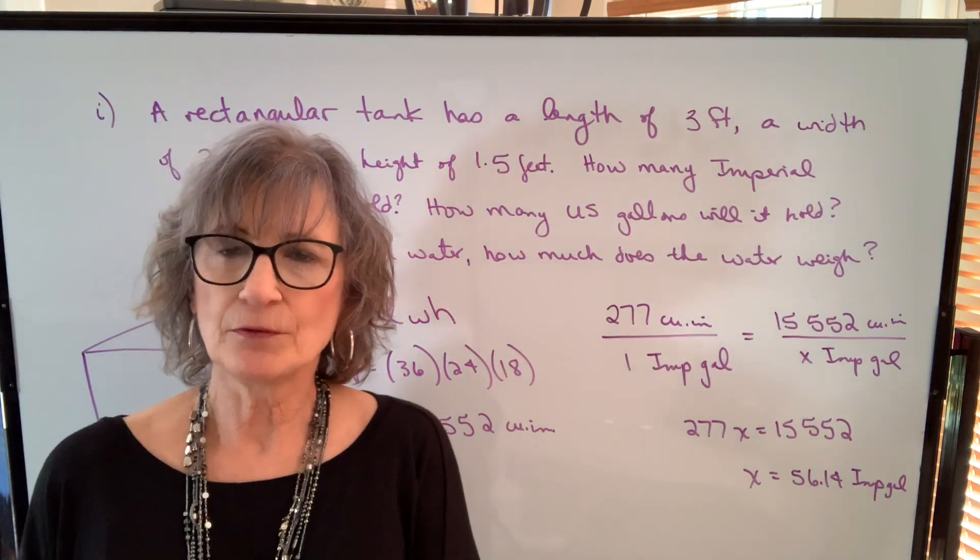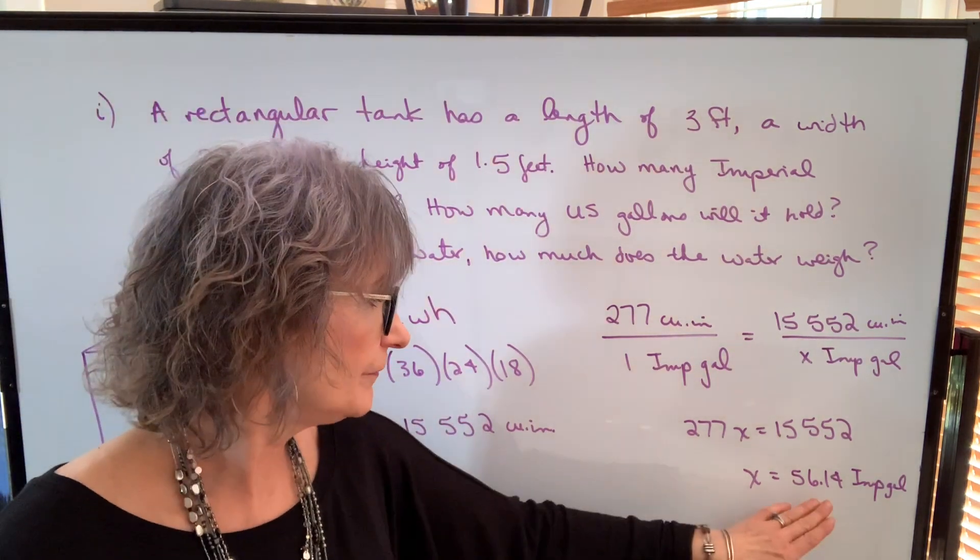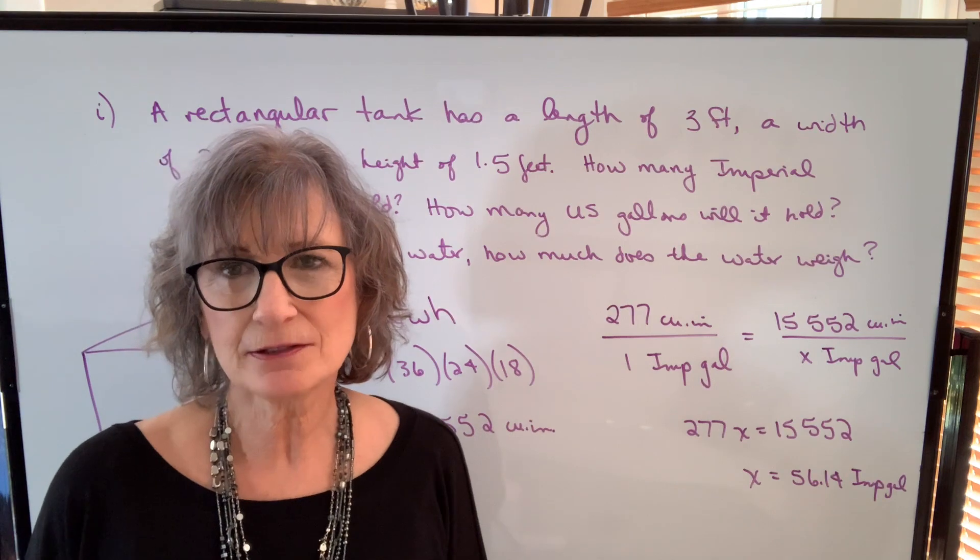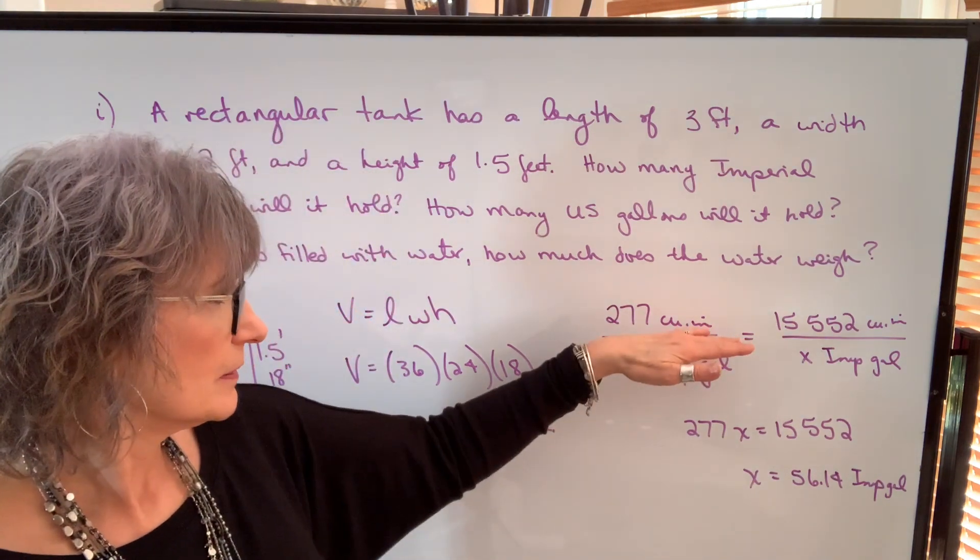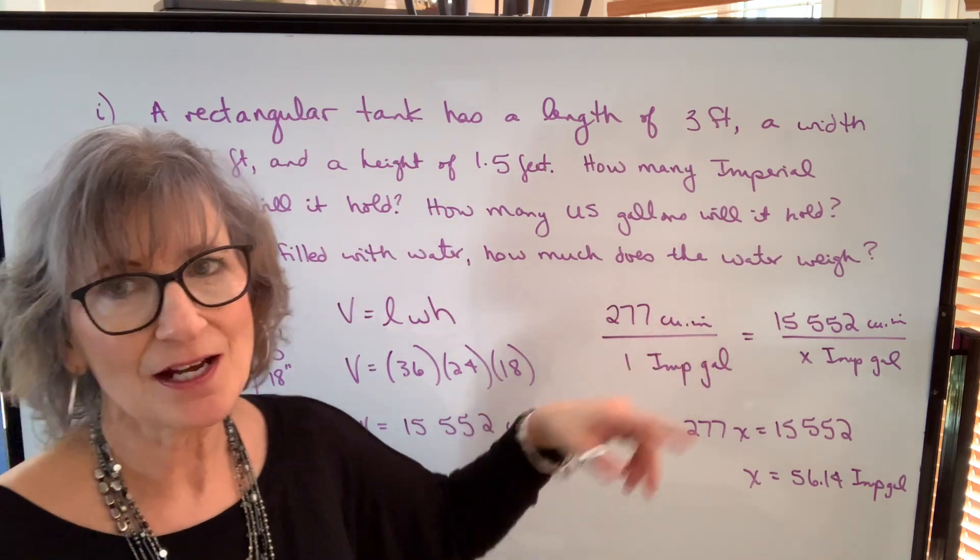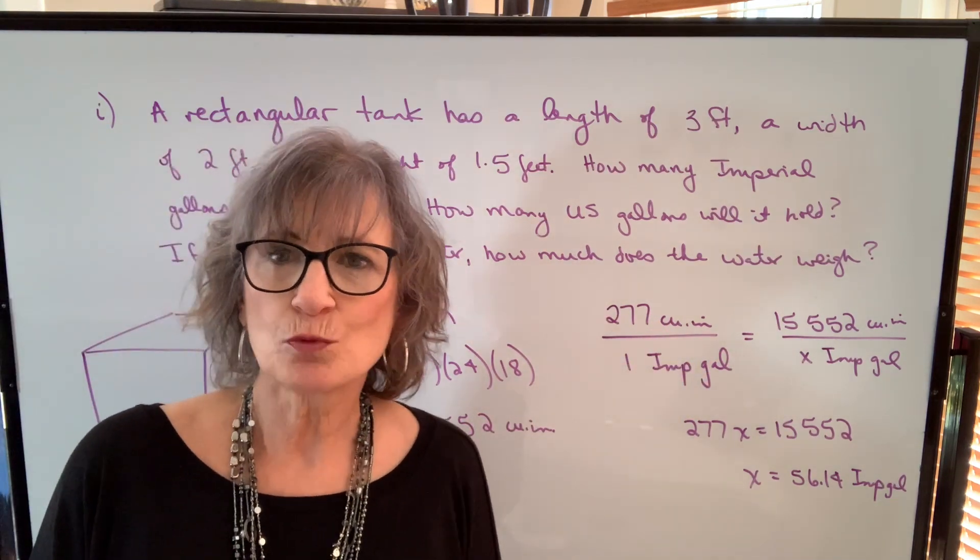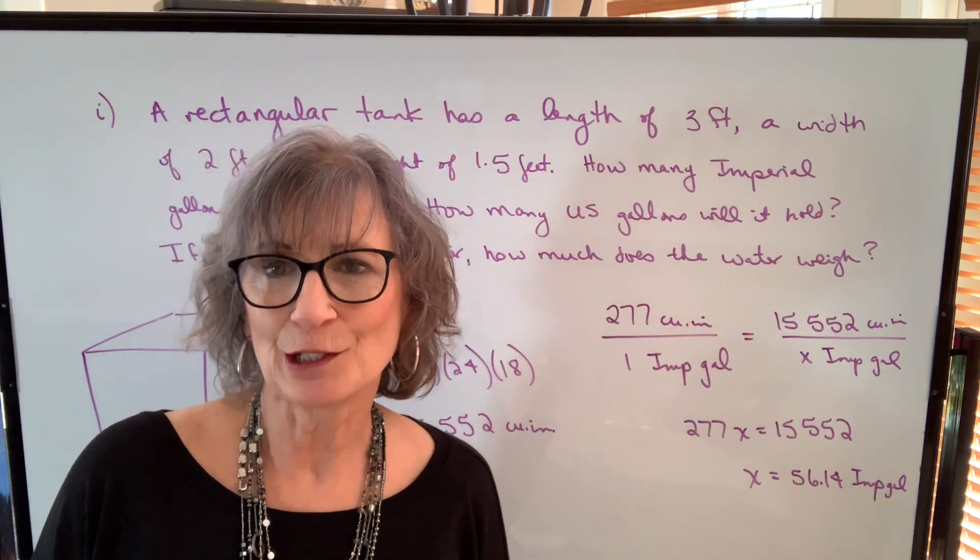When I did it using my volume in cubic feet, I got 56.16 Imperial gallons. But that's what's going to happen when you're working with these interrelationships because they're not exact values. So depending on which one you use, your answer will be a little bit different.